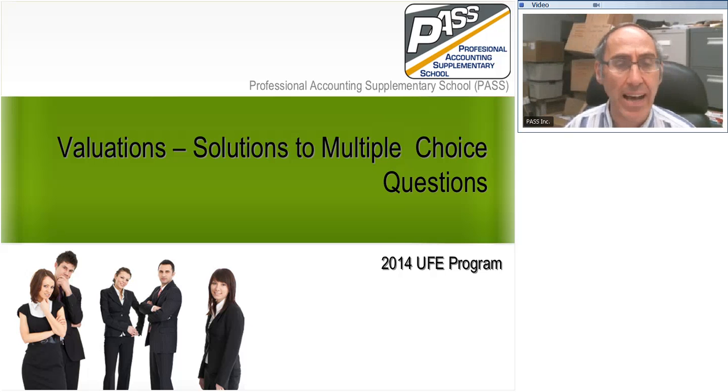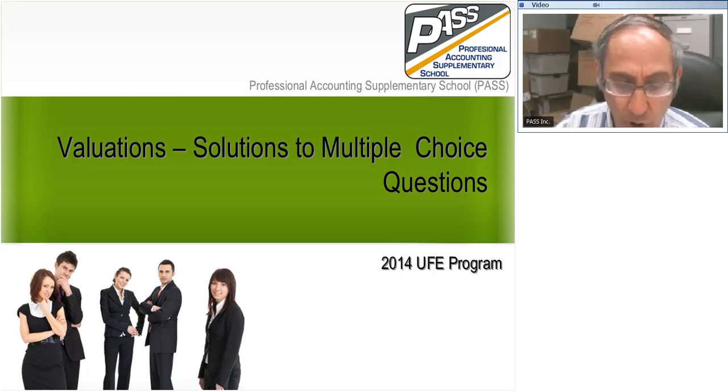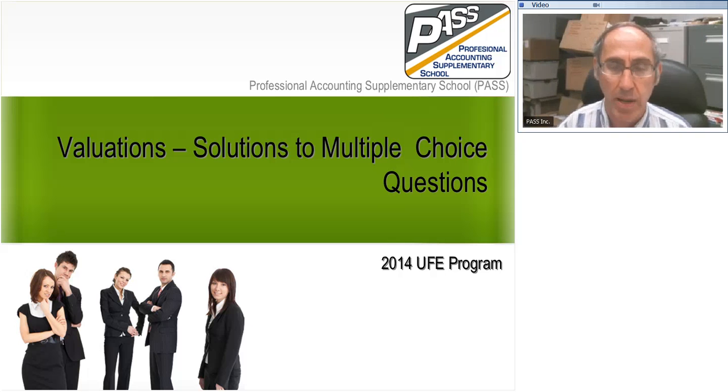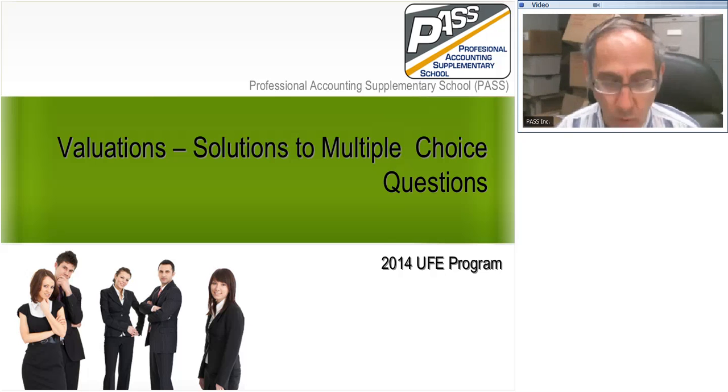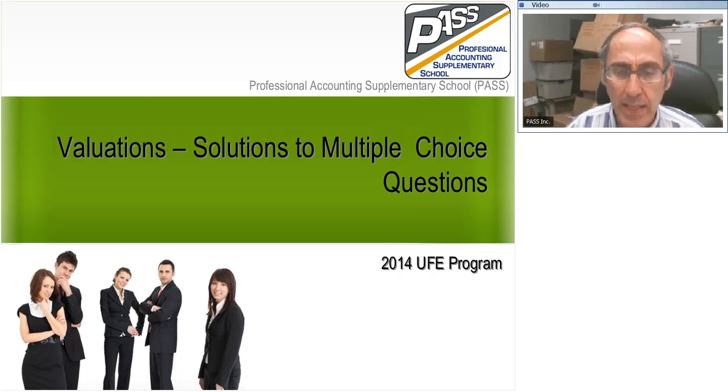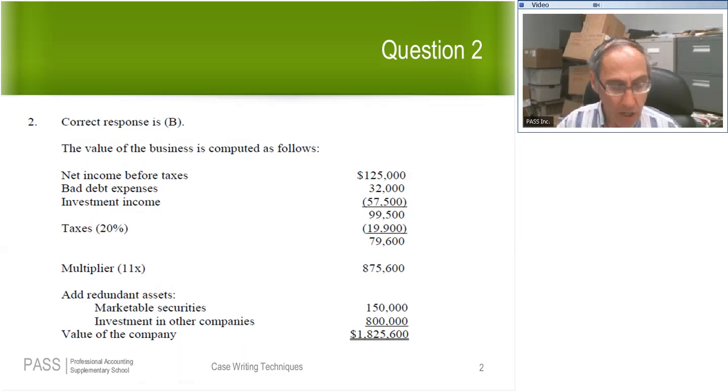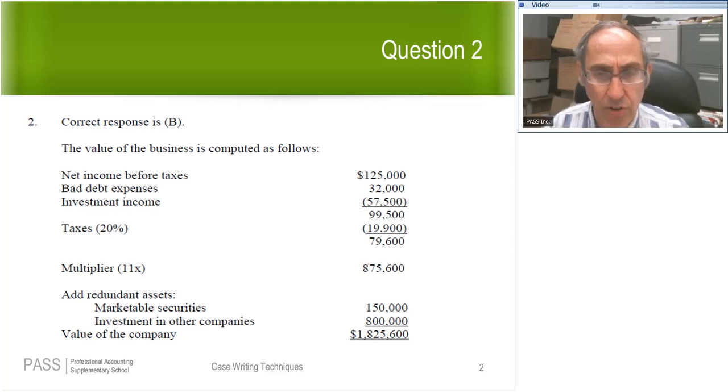The next question I have is question number two. Did anybody work through and try to figure out the value of the company? And for question two, notice they told you to work with a particular multiplier because they wanted everybody working with the same multiplier. That way there would only be one right answer. Can somebody give me an answer for question number two? Was anybody able to come up with an answer that was one of the four that's offered? Let's take a look together at how you get the value in question number two. You're being asked to use the capitalized earnings approach.